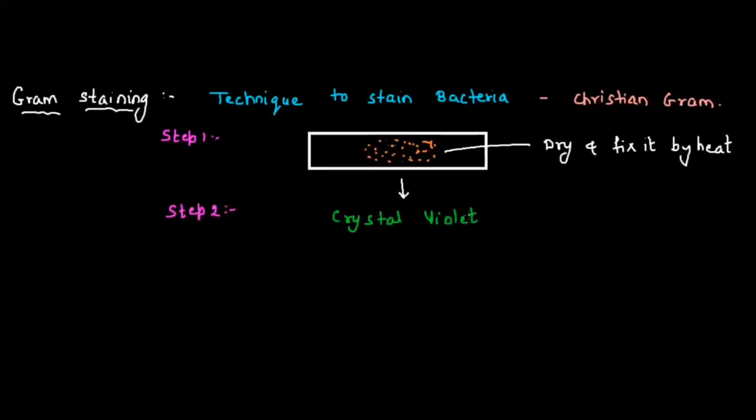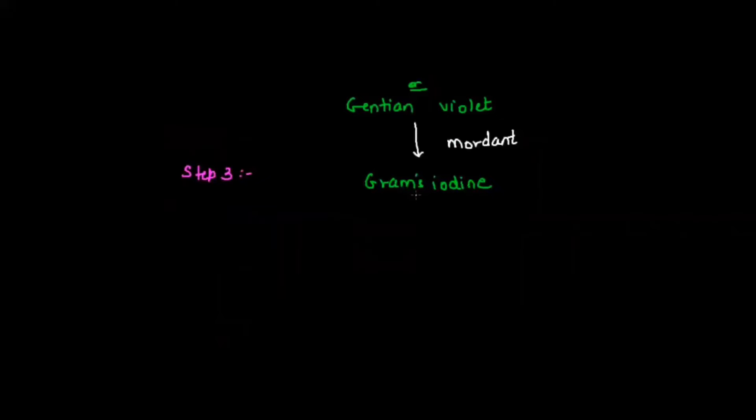Step number two, we are going to use crystal violet, the primary stain, also known as gentian violet. Then we add mordant using Gram's iodine. Step number four, after adding Gram's iodine, decolorization has to be done. We wash this slide in 95% alcohol, and after that we add the secondary stain, normally safranin.